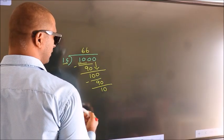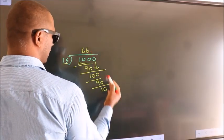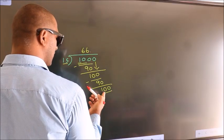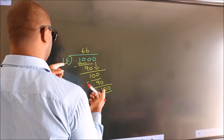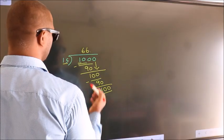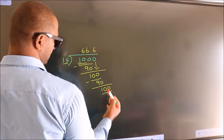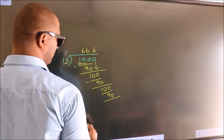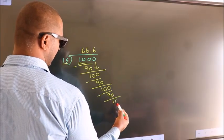So what we do is put a dot and take 0. So 100. A number close to 100 in the 15 table is 15 times 6, 90. Now we subtract and get 10.